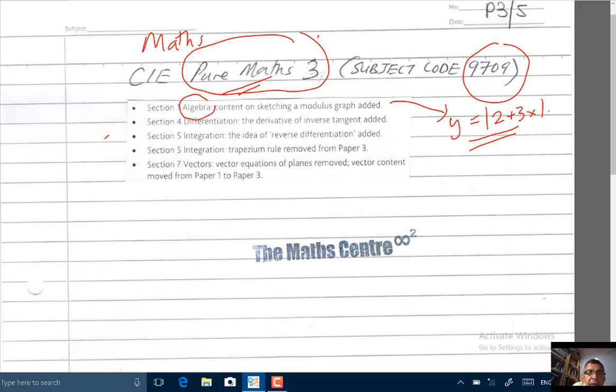Next, under differentiation, the derivative of inverse tangent is added. Which means that you'll be given, let's say, y equals arctangent x, and you'll be asked to find dy dx.